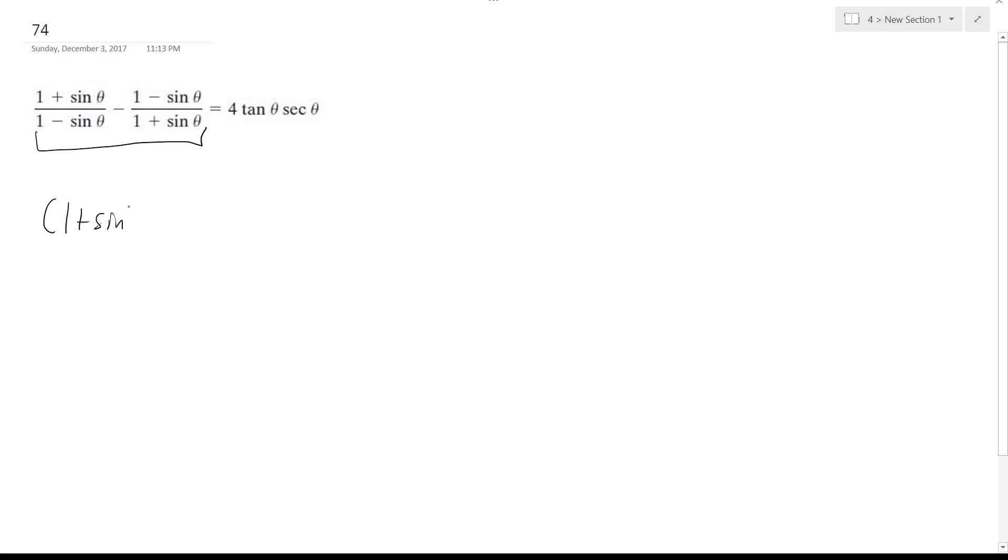So I end up getting 1 plus sine theta squared minus 1 minus sine theta squared all over 1 minus sine squared. Actually, it's just this difference of squares, so it works out pretty nice. It ends up being 1 minus sine squared theta.